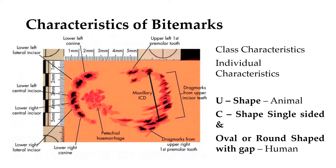Characteristics of bite marks include class characteristics and individual characteristics. Class characteristics are common between a group of people. For example, a U-shape is generally associated with animal bites, though humans may also show a U-shaped bite mark.